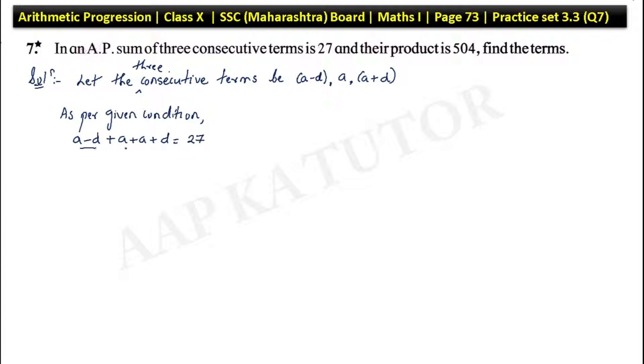Sum of these three terms is 27. d and d cancel, then we have 3a which is equal to 27. So, a value is 27 divided by 3. How much value is this? Nine.